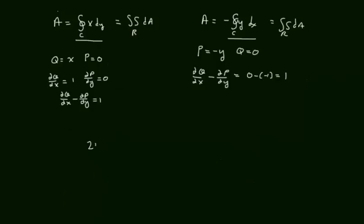Since both equal area, 2 times the area equals the sum of these two integrals. Therefore, area equals one-half the closed line integral of x dy minus y dx. QED.